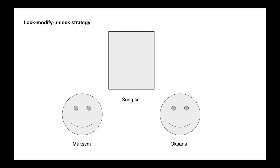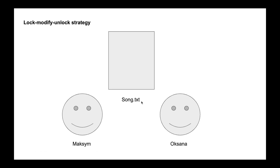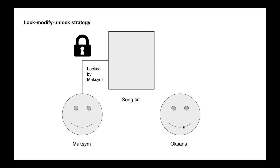Let's imagine we have two developers: Maxim and Oxana. They are creating a program — in our case, writing a song. Right now it's empty. Maxim starts work and blocks the file so nobody else can change it. Oxana can read the data but she cannot change or update this file.